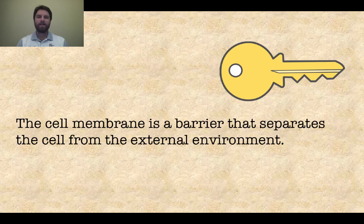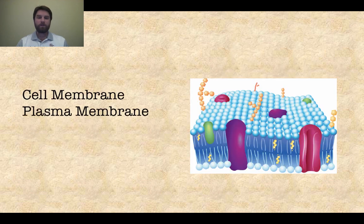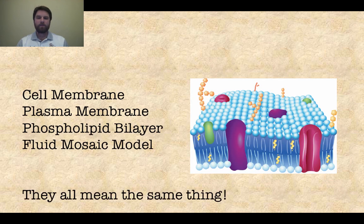The cell membrane is a barrier that separates the cell from the external environment. So let's look at the structure here. You see this picture right here. Sometimes scientists refer to this cell membrane as the plasma membrane, a phospholipid bilayer, or the fluid mosaic model.